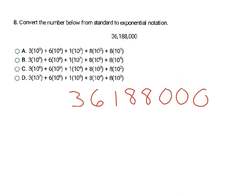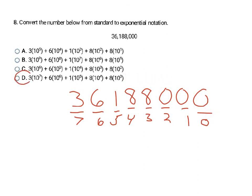Same type of problem here. I rewrite the number and put lines underneath to show each place value, then write the exponent expected on the 10 underneath each digit. Ones start at zero and go up: 1, 2, 3, 4, 5, 6, 7. So beside 10 to the 7th I expect a 3, beside 10 to the 6th a 6, beside 10 to the 5th a 1, beside 10 to the 4th an 8, and beside 10 to the 3rd an 8. The rest are zero so they get left off. My final answer is D again.